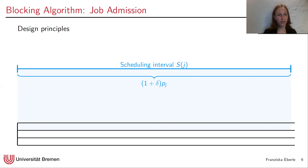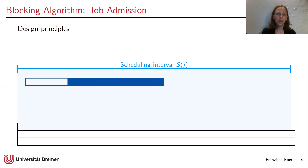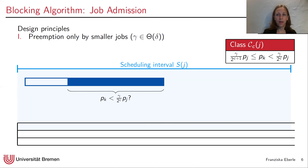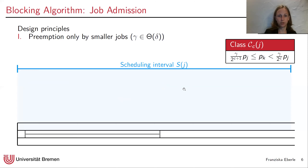Once we admit a job, we already guarantee we complete it regardless of the commitment model. When the next job — the navy blue job — appears, we know we cannot admit it to the same machine or we could not finish the first blue job. To formalize this, we introduce the notion of classes: each job classifies arriving jobs during its scheduling interval, and only admits those belonging to one of its classes — specifically if the processing time is smaller by at least a factor of γ. Since the navy blue job is too long, it is instead admitted to the second machine.